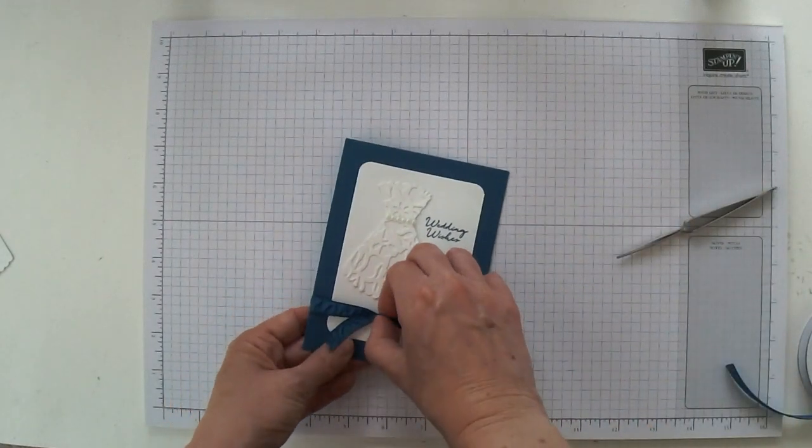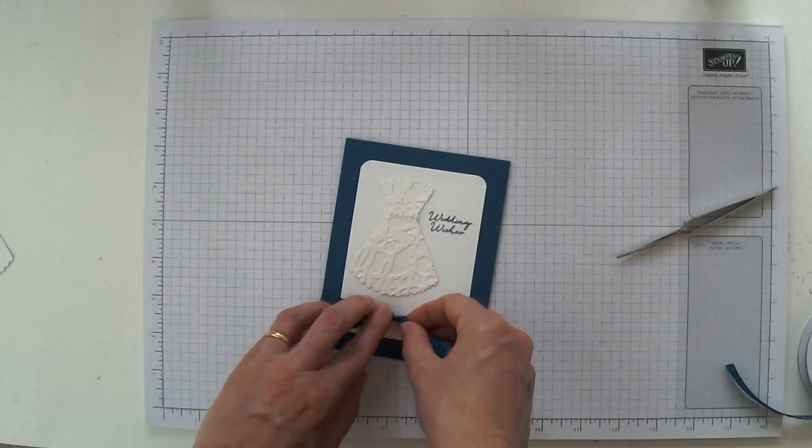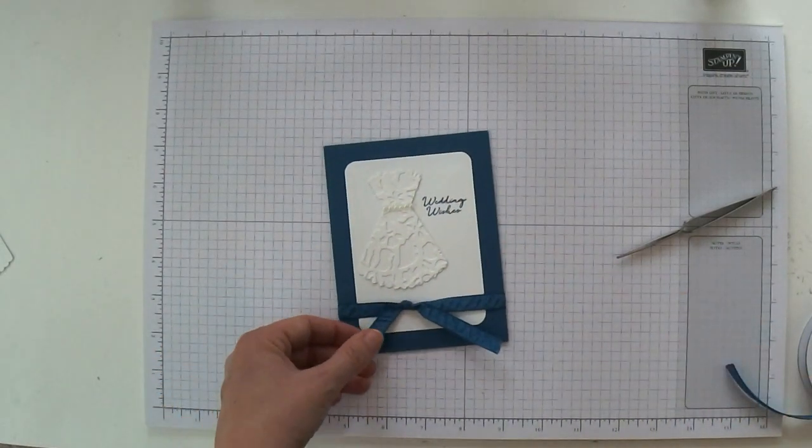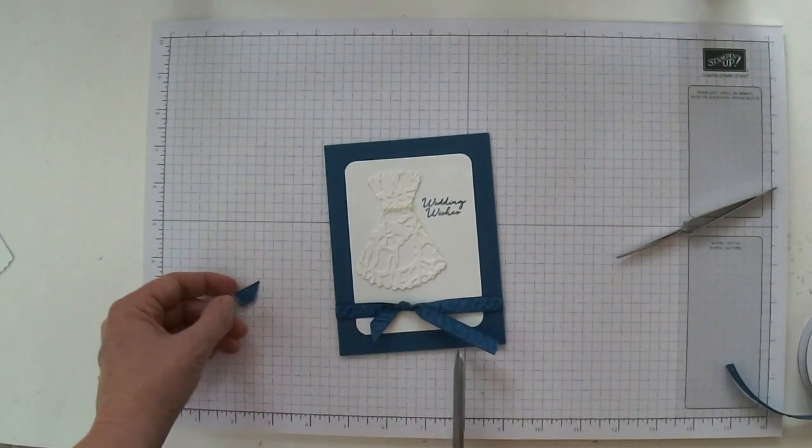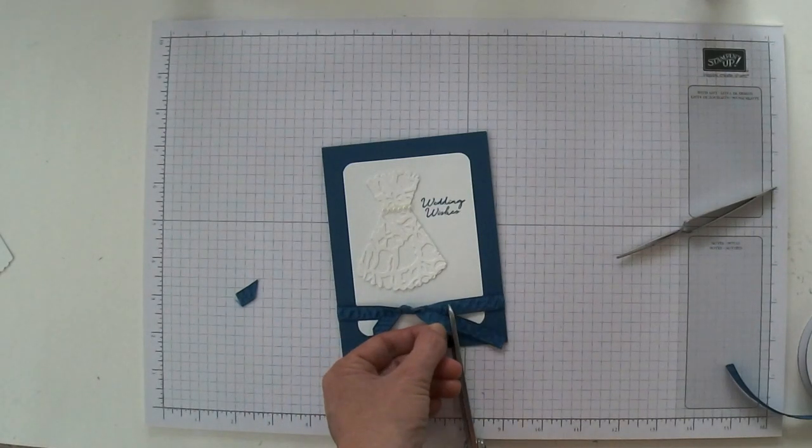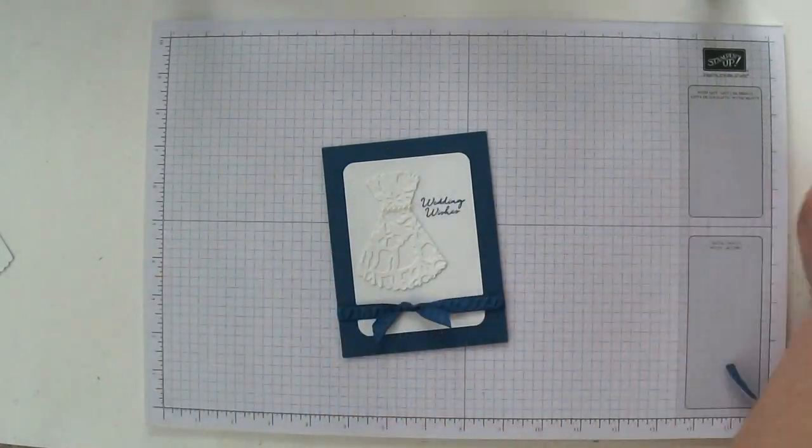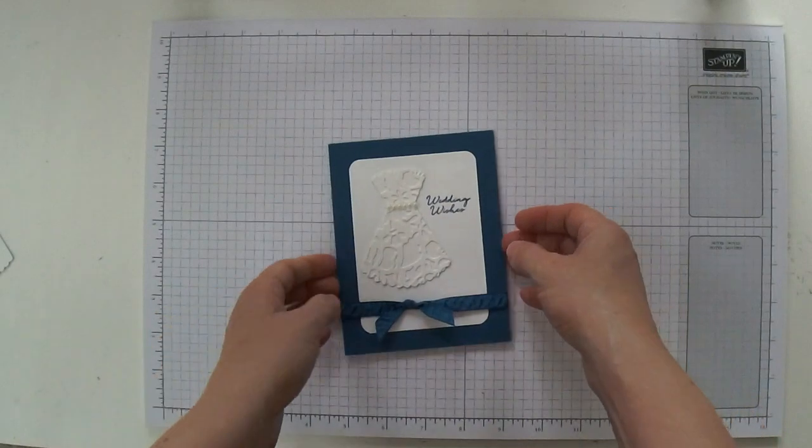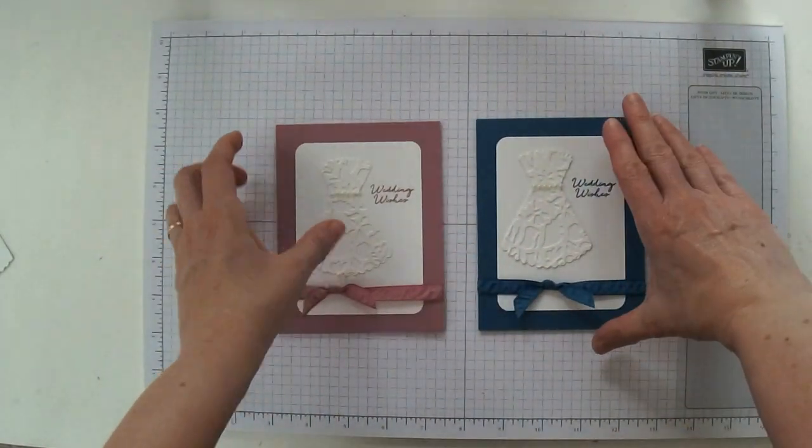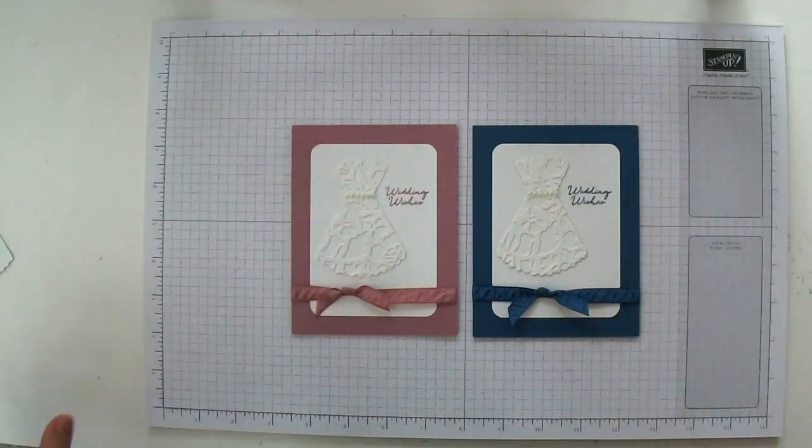And if you want to at this point, you can shift it a little bit into the direction you want to go, and then all we need to do is just cut off the ends. I'm going to angle cut them like that. And there you go. I've got a Dapper Denim wedding card, and earlier I made this Sweet Sugar Plum card. Aren't they pretty?